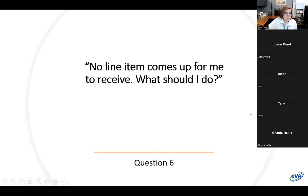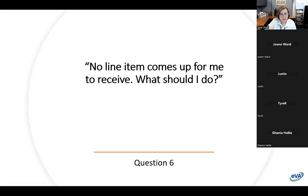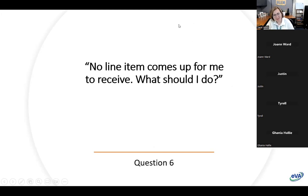Next question: 'No line item comes up for me to receive — what does that mean?' I created a receipt and it's saying no line item. That's the one where the order may have already been fully received. If you look at the orders box on the right-hand side, you can see the ordered amount and received amount — if it's been fully received, that's why no item is showing up. The end user should then delete that draft receipt.